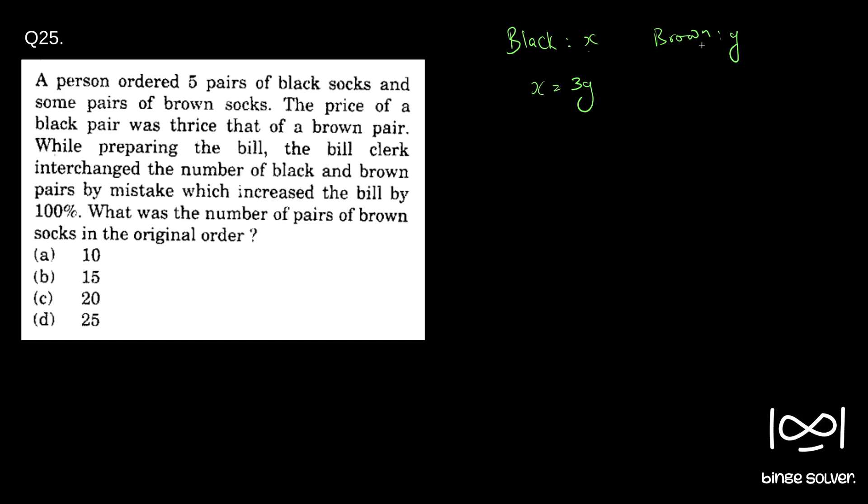So given x is the price of black and y is the price of brown, and the person first ordered five pairs of black socks. Then that gives 5x plus let's say number of brown socks capital B. So that means number of brown is capital B into y. This is the original bill price.